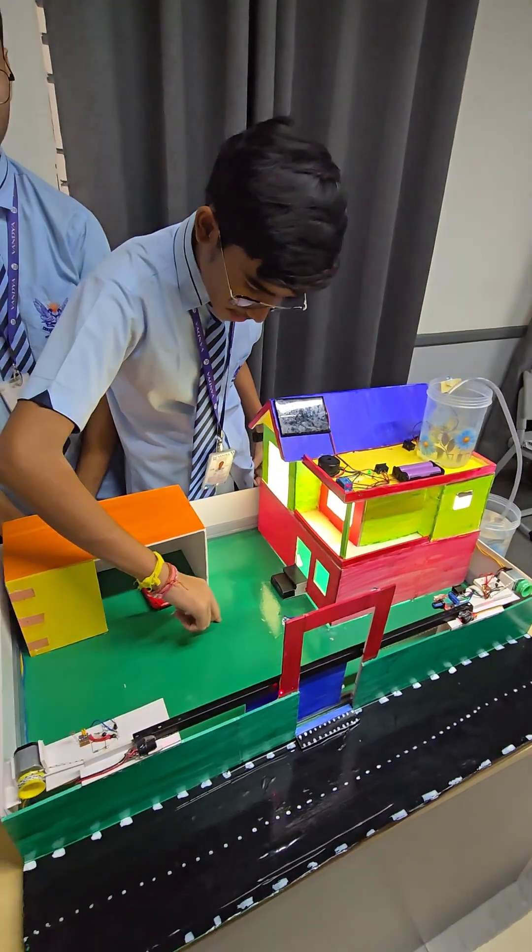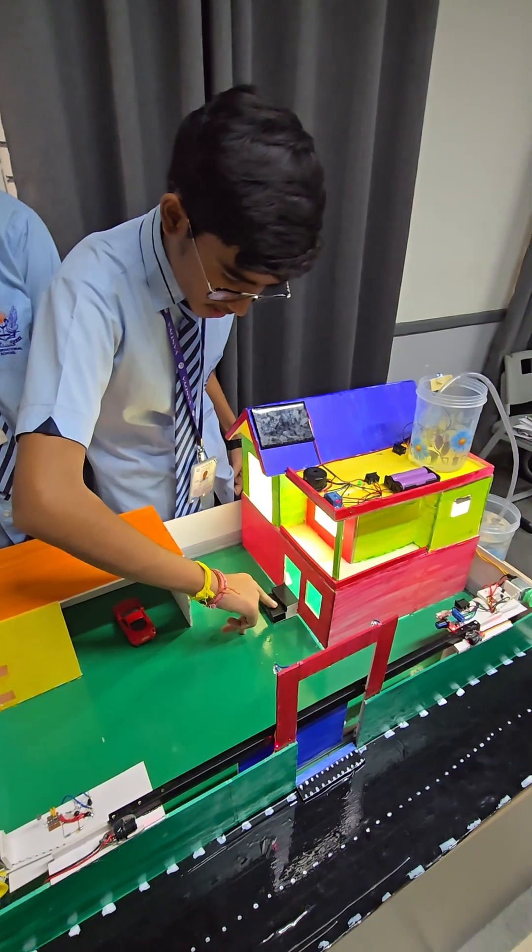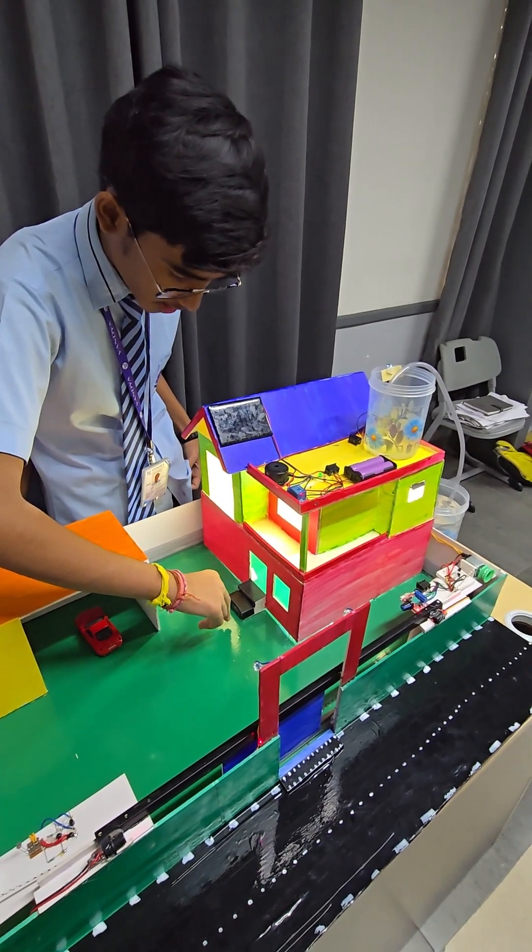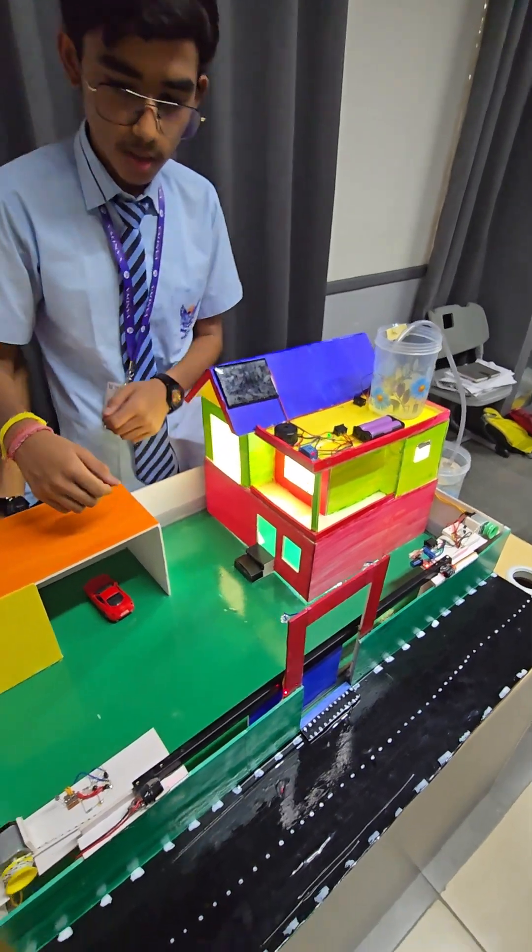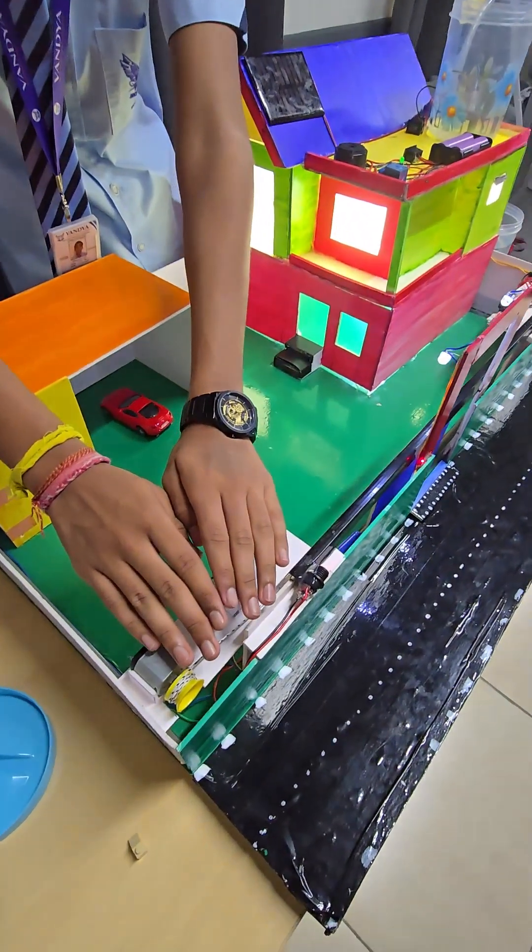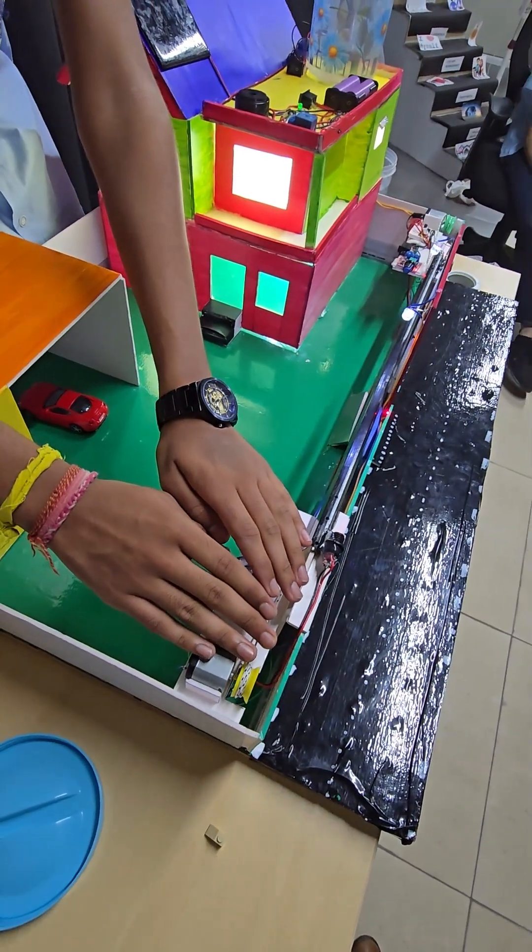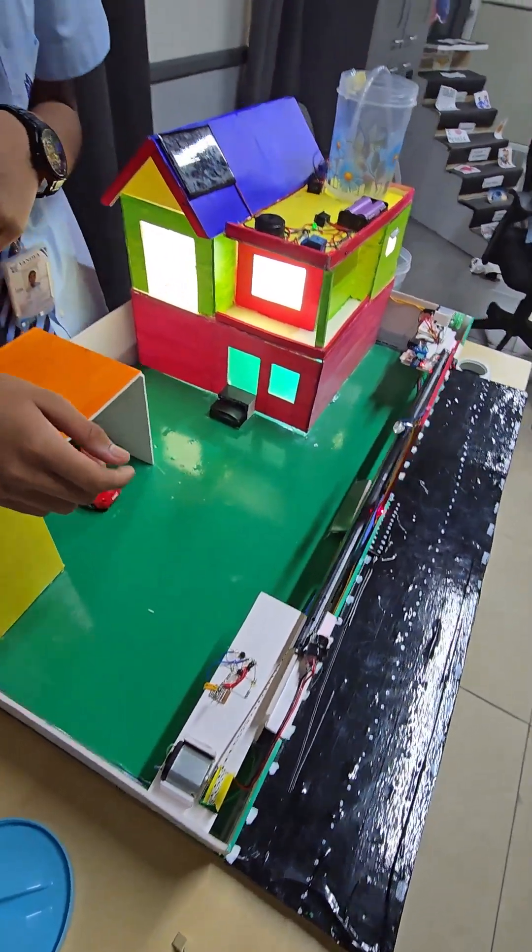When a person comes walking and steps on the staircase, the doorbell automatically rings due to the pressure switch present in it. And when it gets dark, the lights automatically turn on due to the LDR sensors present in it.